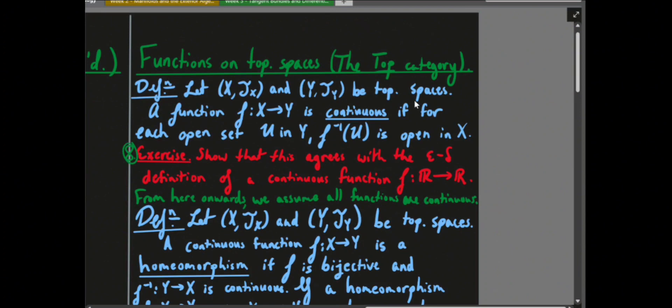If you have two topological spaces X and Y, each with its own topology, a function F from topological space X to topological space Y is continuous if every open set in Y maps through the inverse of F to give you an open set in X. This seems a little strange — usually in elementary mathematics you don't map sets through inverses of functions.